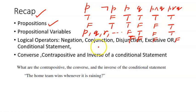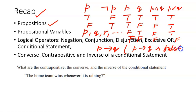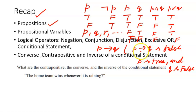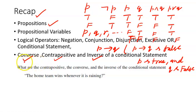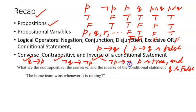We also saw the conditional statement p implies q. An important point: p implies q is false only when p is true and q is false. In all other cases p implies q remains true. We talked about the converse, contrapositive, and inverse of a conditional statement: if p implies q is the conditional, the converse is q implies p, the contrapositive is ¬q implies ¬p, and the inverse is ¬p implies ¬q.